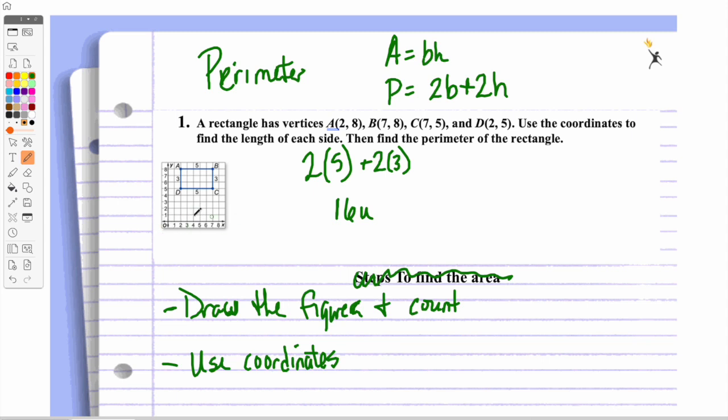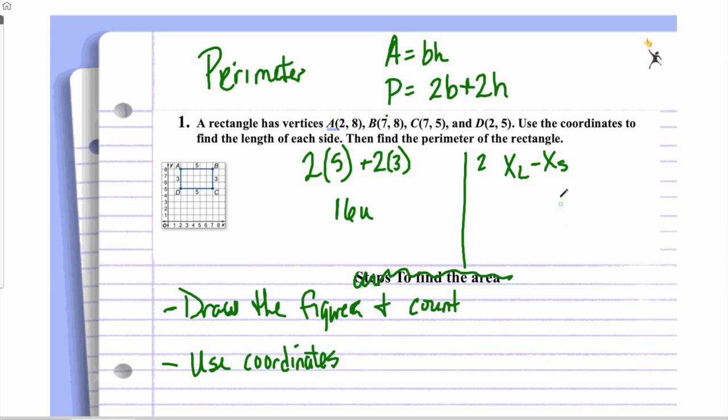So if we take a look at this, our base right here is parallel to the x-axis. So one of the ways I can find the difference on the x-axis, I could count, but I could also take 7 minus 2. And what I would do on a problem like this is I'd take the greater. So method 2 is to take the larger x-value minus the smaller x-value. So I've got 7 minus 2, and that gives me 5 for my base.